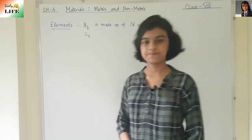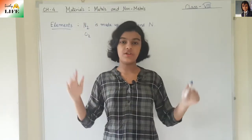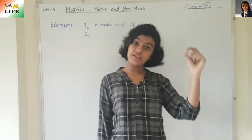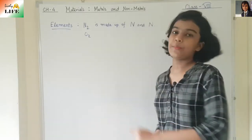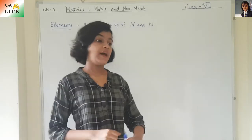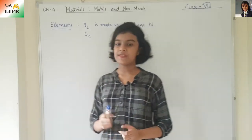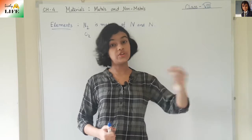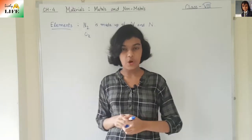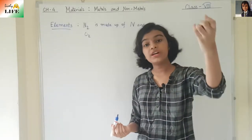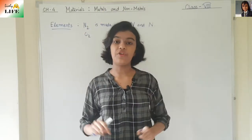Now let's move to metals and non-metals. These metals and non-metals differ in various ways — one is physical properties and the other is chemical properties. Physical properties means how they look, what shape they are, how hard they are. Chemical properties means how they react with oxygen, water, acids, and bases.